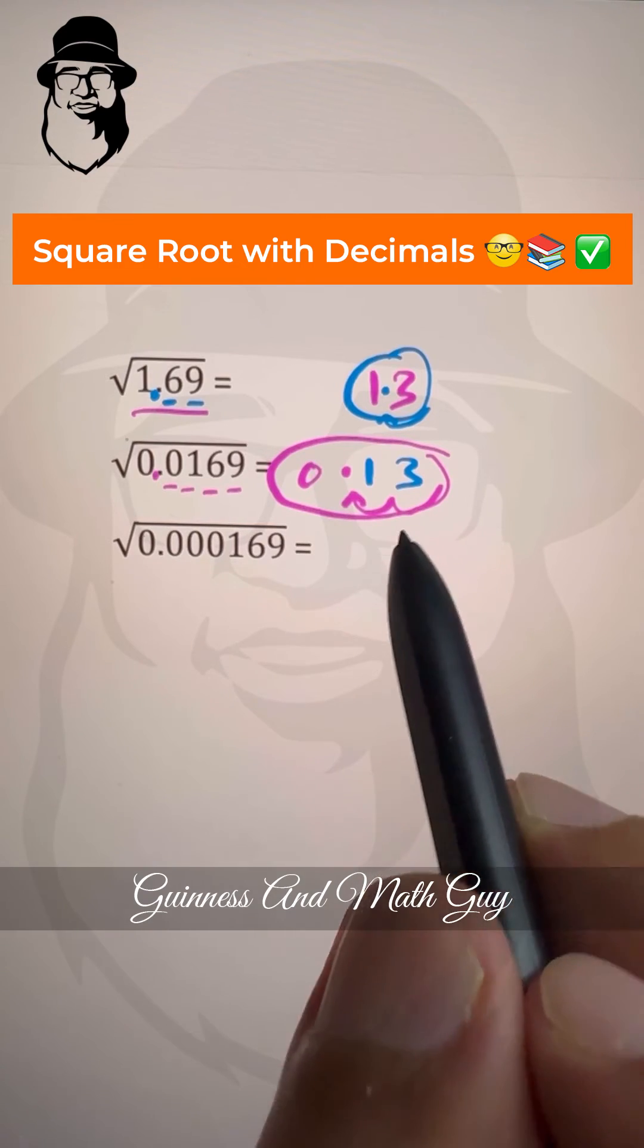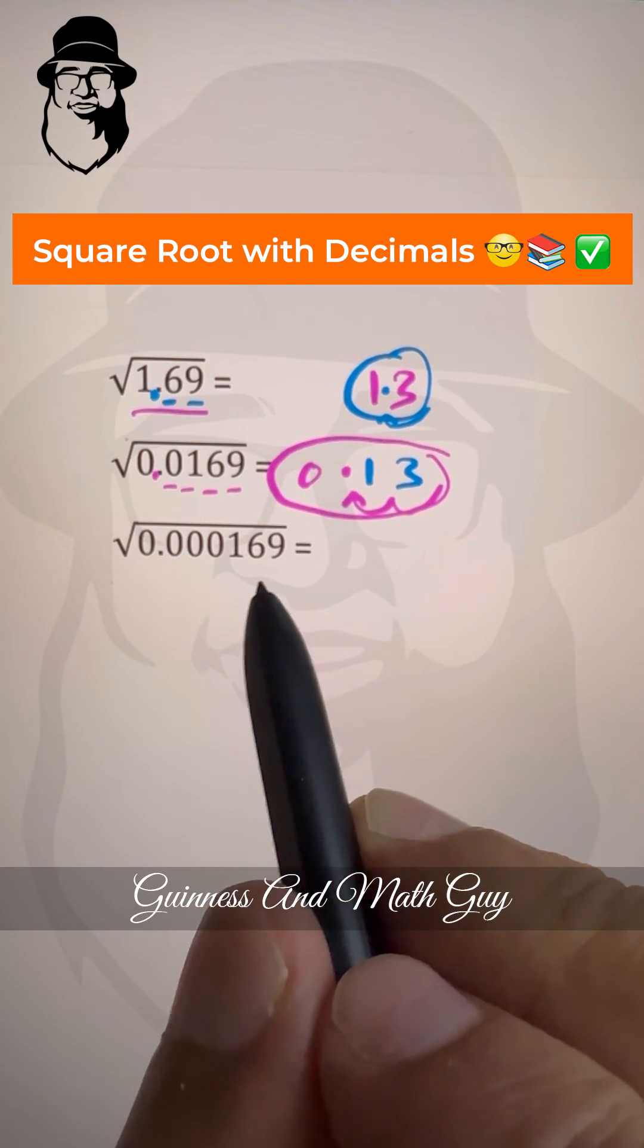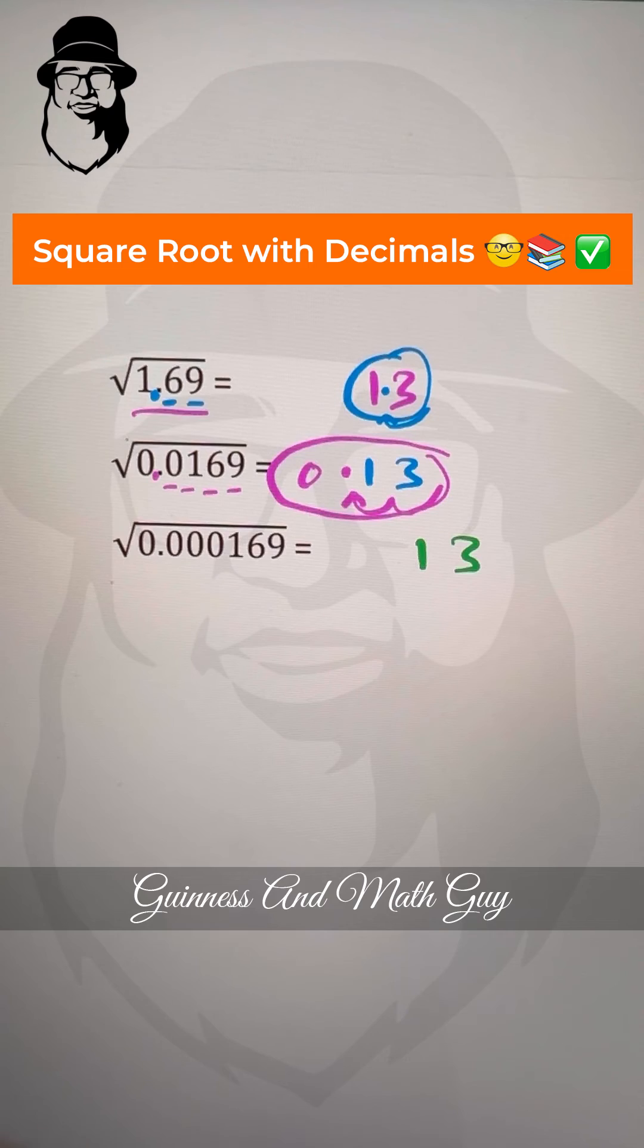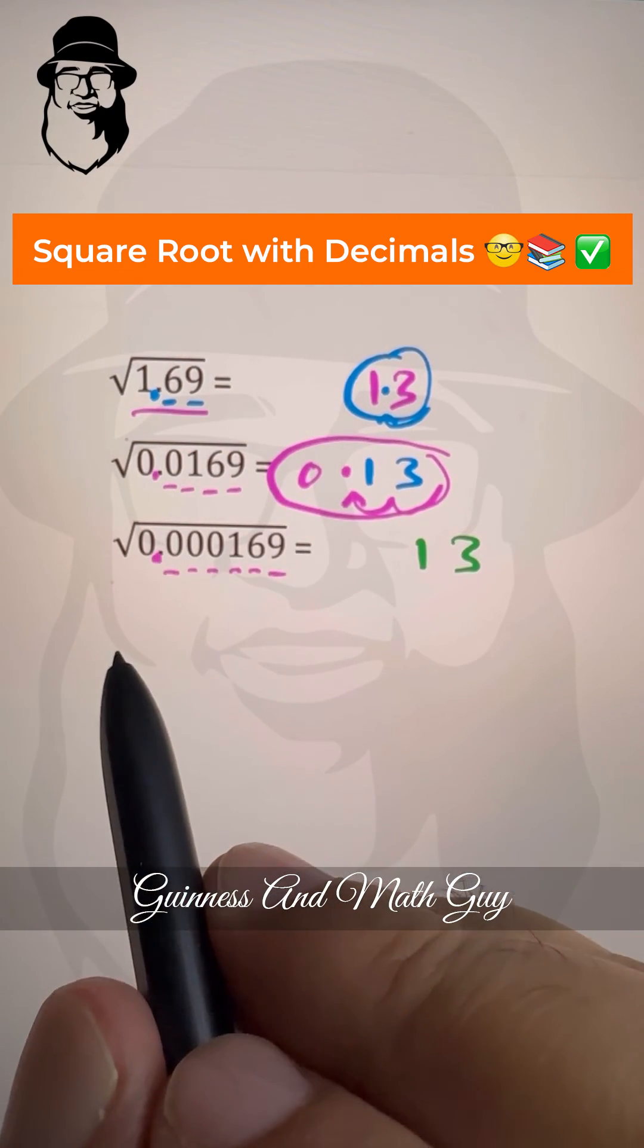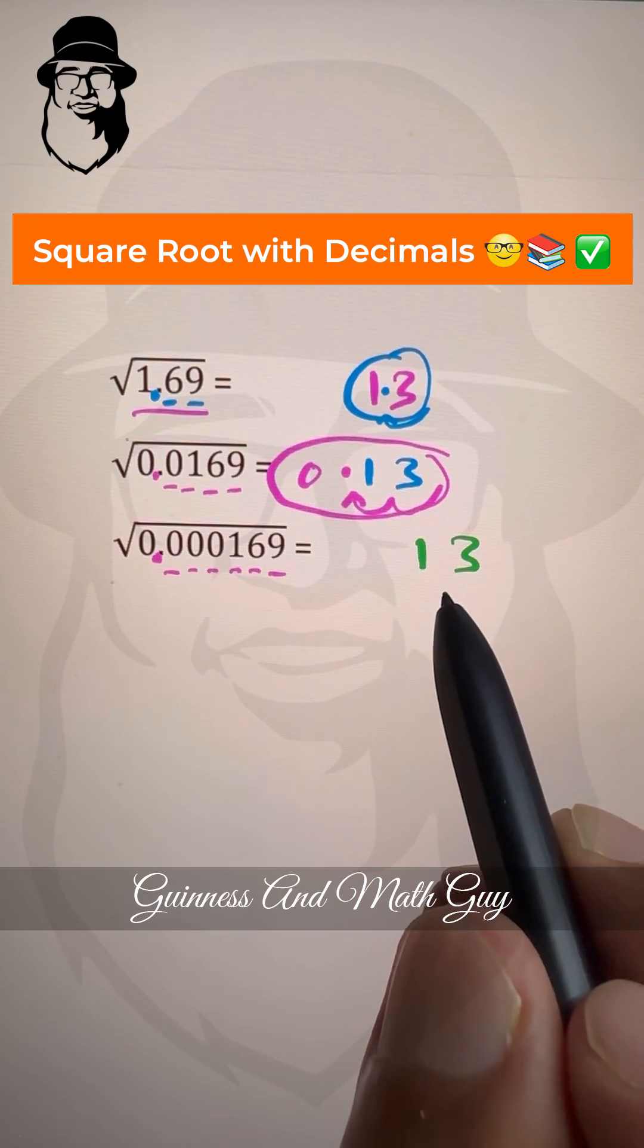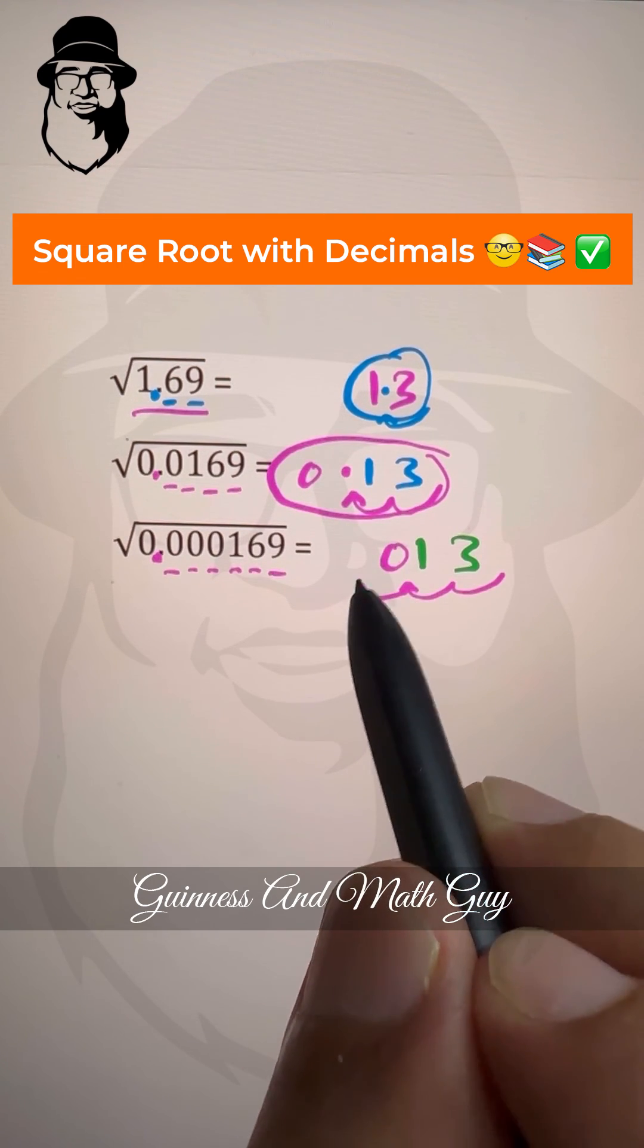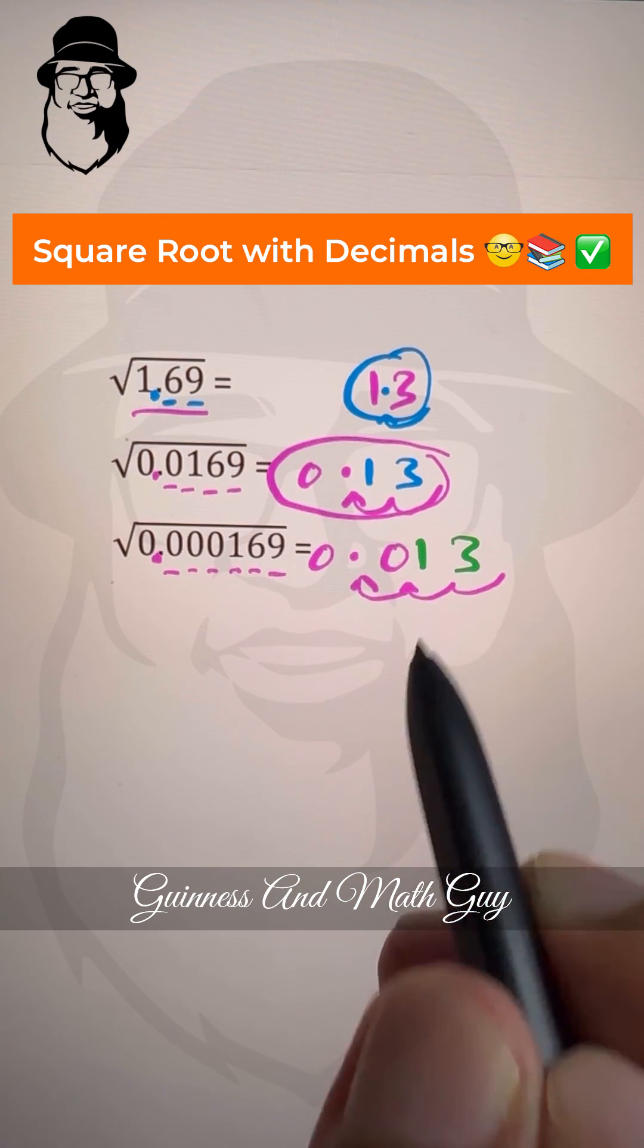And in the last question we have 169 again, so we write 13 here. And we count the digits: one, two, three, four, five, six, and then we have decimal point. So half of six is three, but we have only two digits here, so one digit and two digit, no problem, just put the zero and we have the third digit also, and we have point here. So the answer is 0.013.